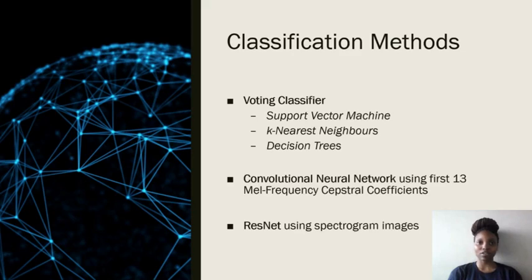As my partner has already introduced me, I'm Sipiwe. The classification methods that we opted to use include the voting classifier, which ensembles three different algorithms: SVMs, KNNs, and decision trees. Another method we opted to use is to train a CNN using the first 13 MFCCs extracted from each song. We also trained a ResNet using the spectrum images generated from each song.